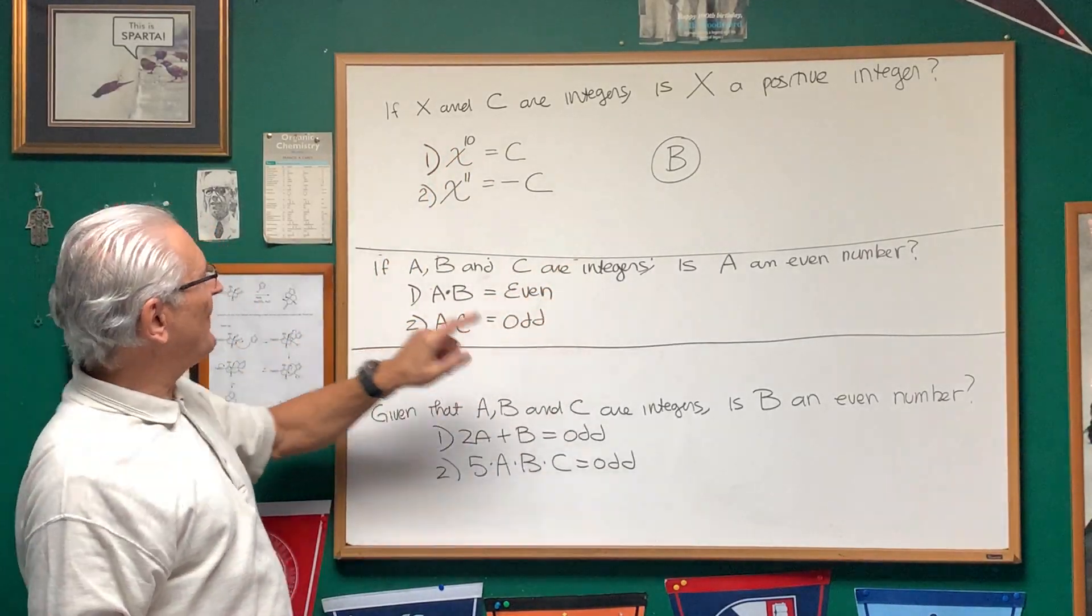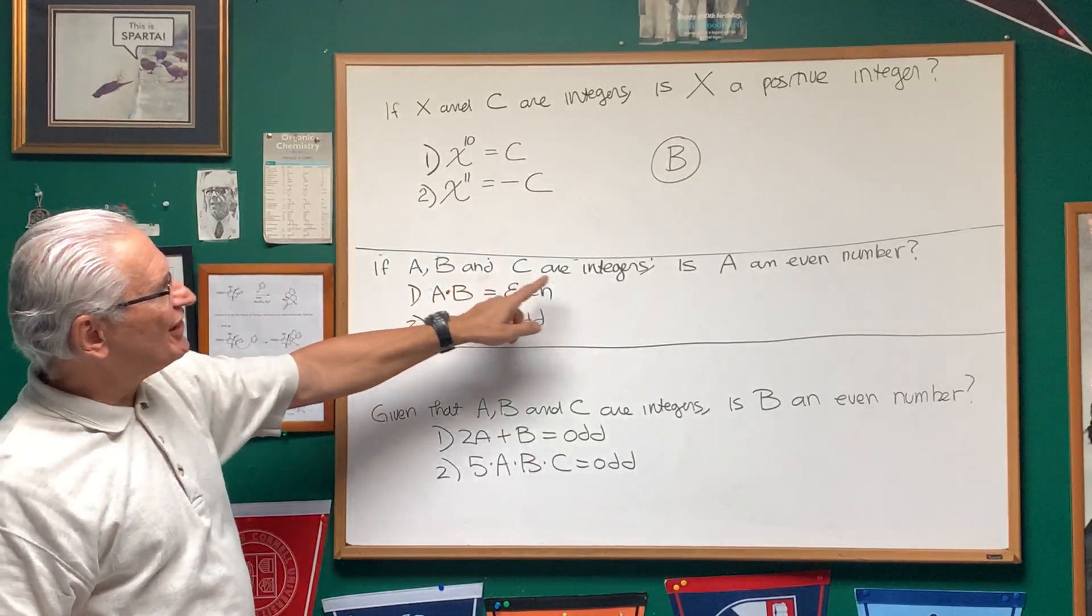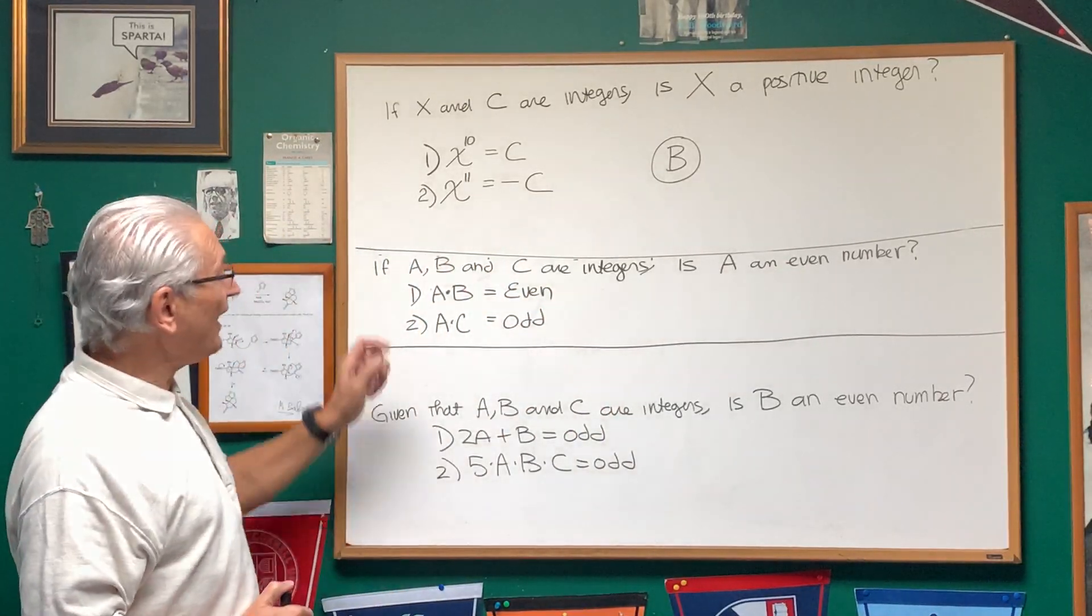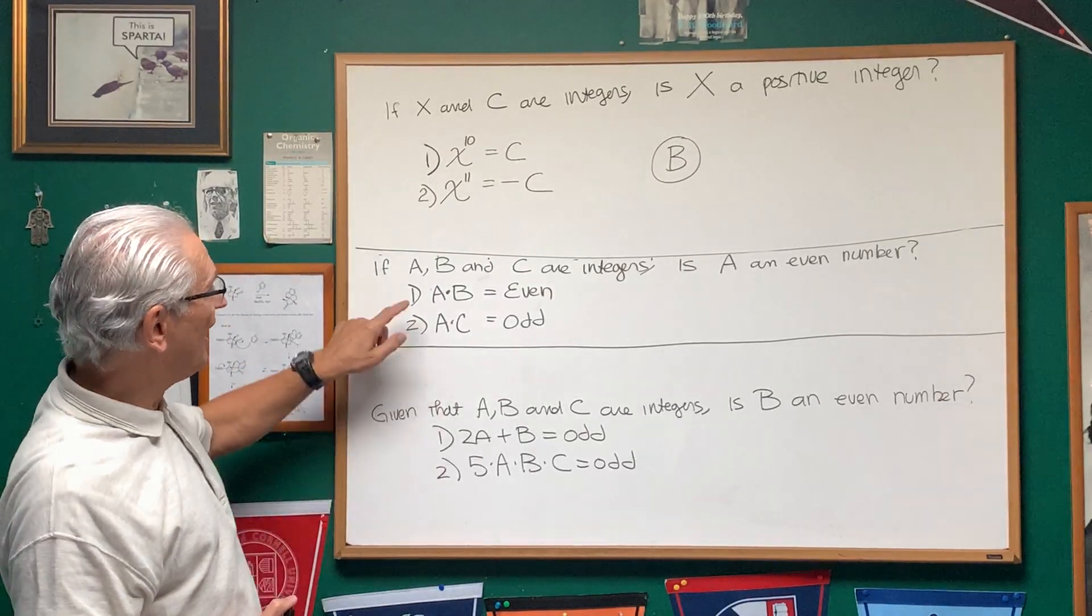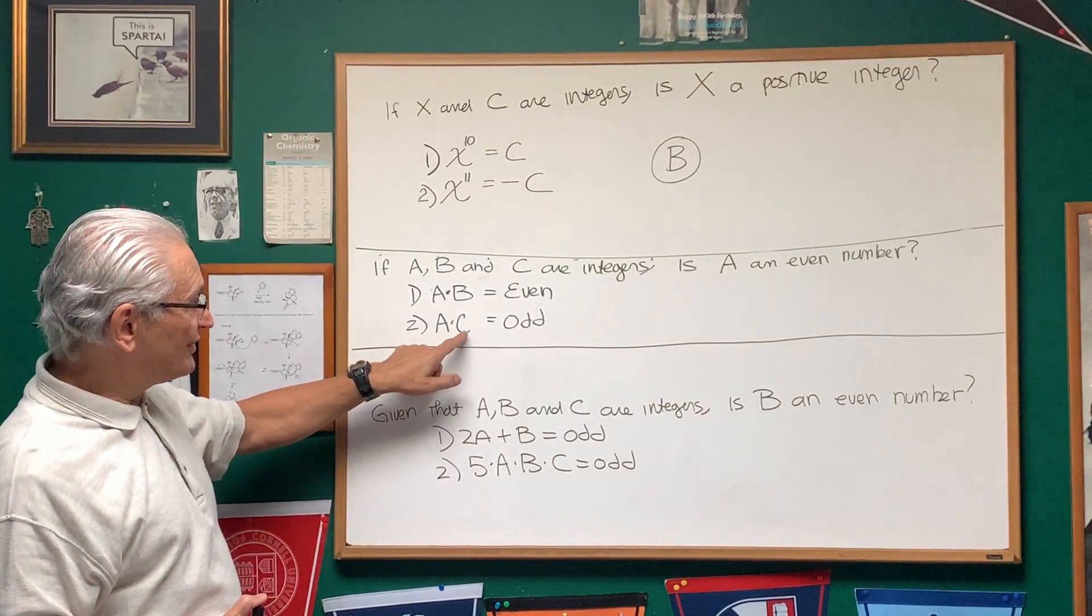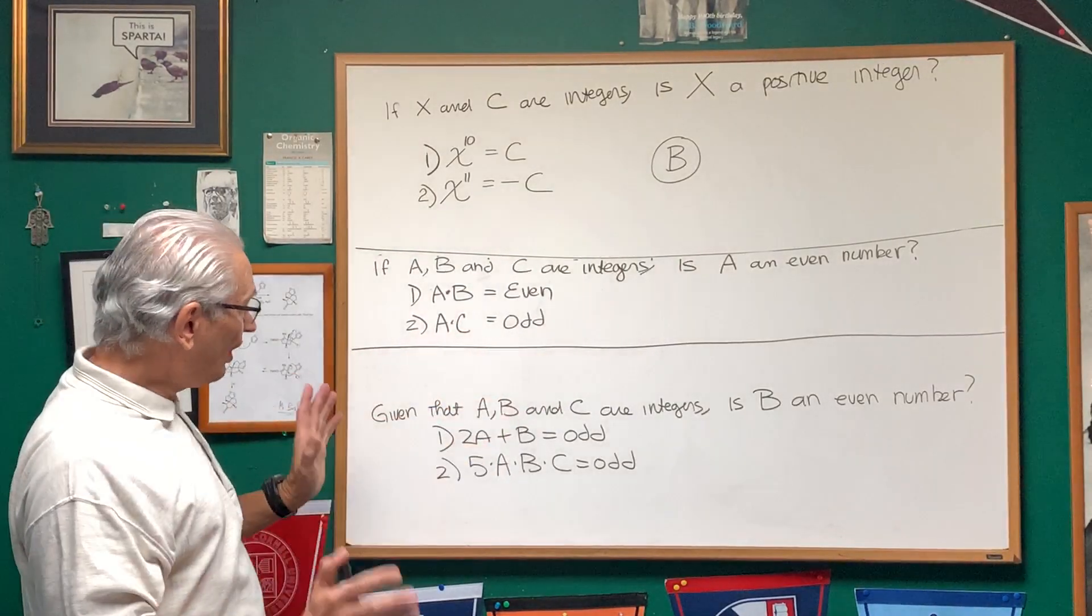Now let's look at the next problem. If A, B, and C are integers, is A an even number? Here are the two statements to be considered. Statement one, A times B is even. Statement two, A times C is odd.